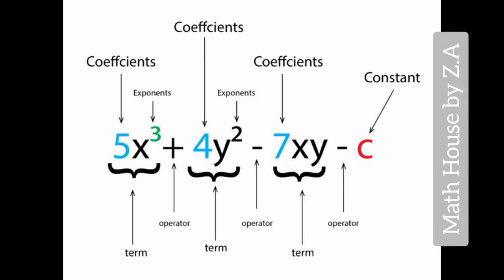Here is another algebraic expression with four terms. As you can see, we have plus, minus, and minus - three operators and four terms. The first term is 5x³, second term is 4y², third term is 7xy, and the fourth term is c, which is a constant.